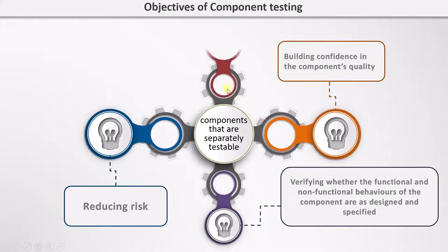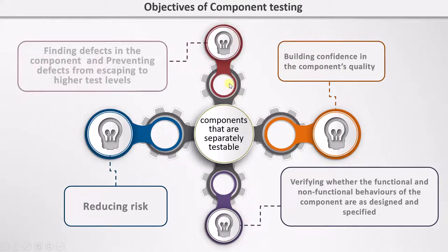And this is the last objective of component testing: finding defects in the component and preventing the defects from escaping to higher levels. We have to find the defect in the component being tested and then stop it from reaching the next level, which is the integration level. Those were the objectives of component testing, and as you can see, they all focus on individual components.